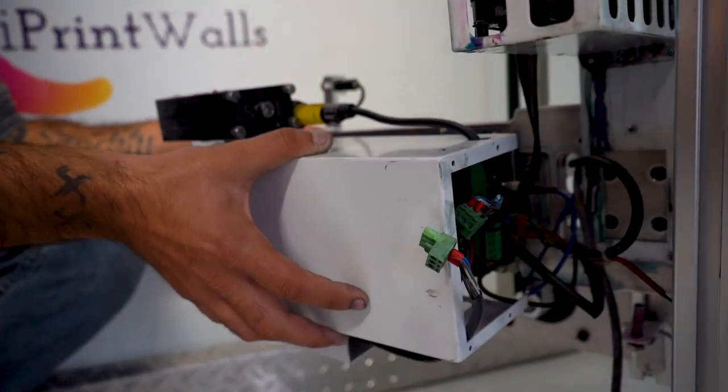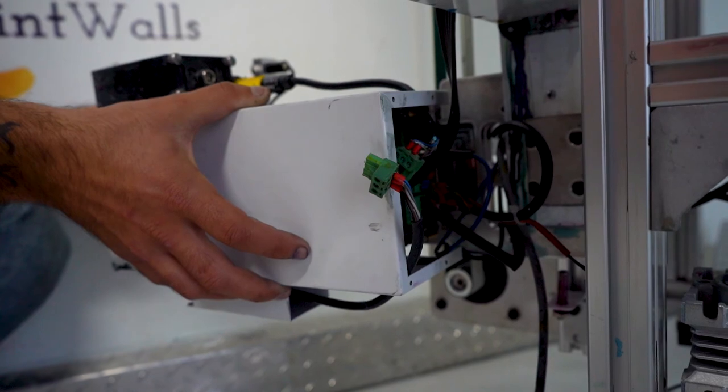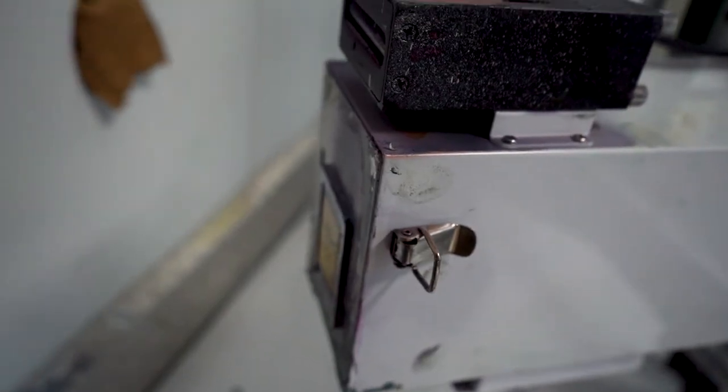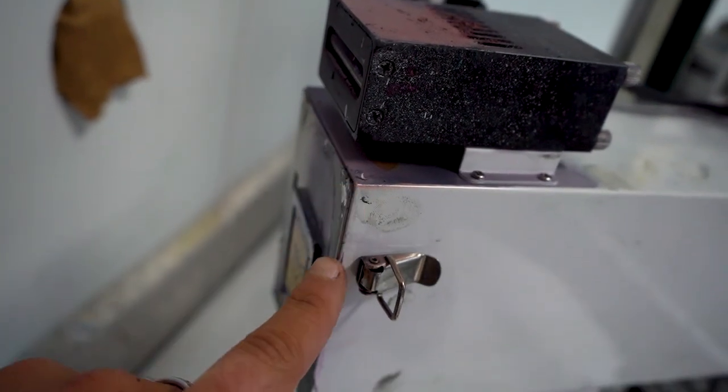Remove these two screws. Slowly slide the housing into place. If you have installed the printhead's housing correctly, this will be flush.